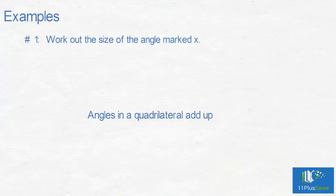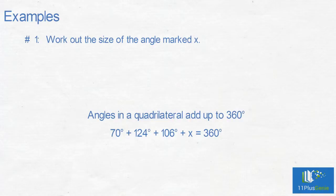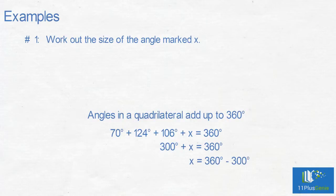Example 1: Work out the size of the angle marked X. Angles of a quadrilateral add up to 360 degrees. So 70 degrees plus 124 degrees plus 106 degrees plus X equals 360 degrees. Simplifying: 300 degrees plus X equals 360 degrees, so X equals 360 minus 300, which equals 60 degrees.